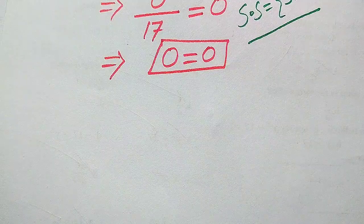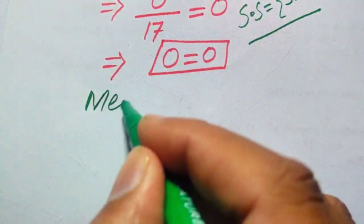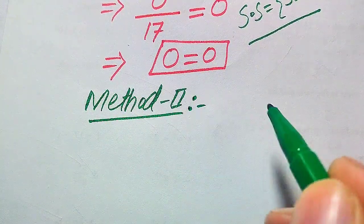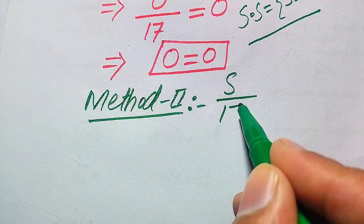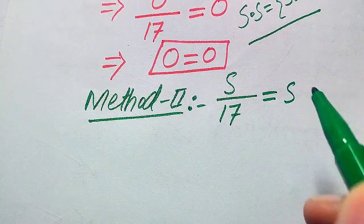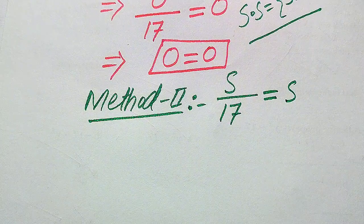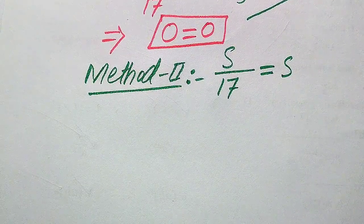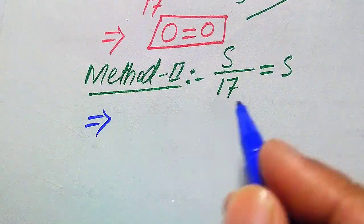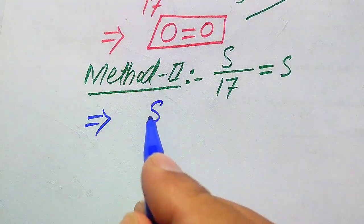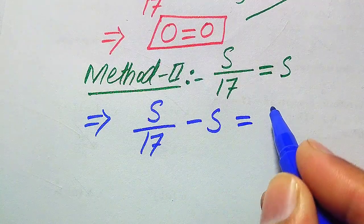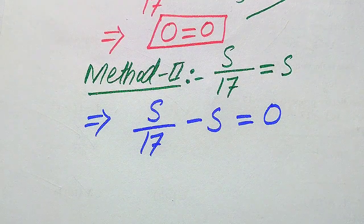Now we move towards our second method. We copy down the given equation: s divided by 17 equals √s. In this method we use the LCM technique to find the roots. We move √s from the right-hand side to the left-hand side, so it becomes s/17 − √s = 0.